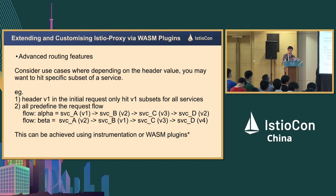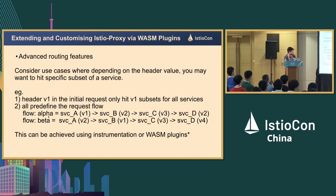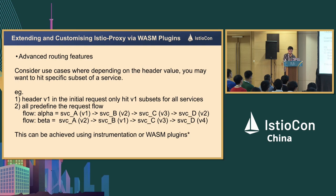One easy way is to use instrumentation. If your application is instrumented, you can create virtual services depending on the request flow. For example, in the alpha flow, if the header is propagated throughout the request chain, you can create a virtual service that does a header match — if the header is alpha, route to V1; if beta, route to V2. But if the application is not instrumented, you can use a Wasm plugin with shared data between different VMs, though it's not very efficient at the moment.